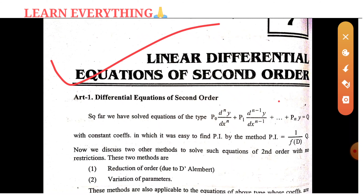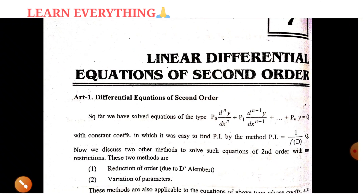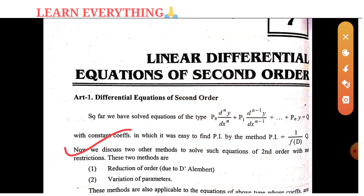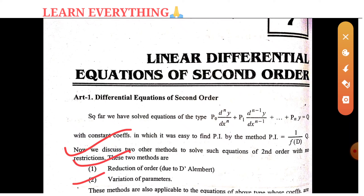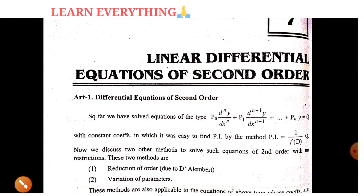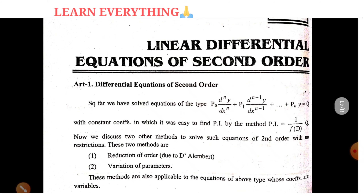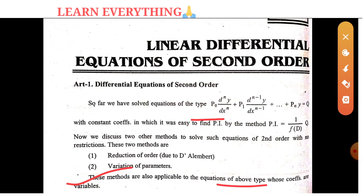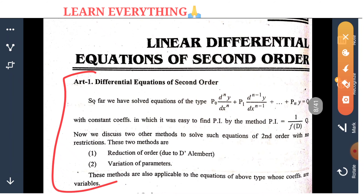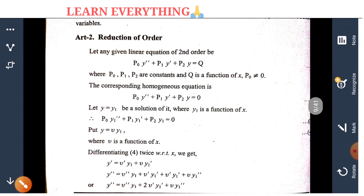We need to have the first order equations and find out the particular integral. We will discuss two other methods to solve such second-order equations with no restriction. There are two options: the reduction of order and the variation of parameters. Clear — next, the reduction of order.